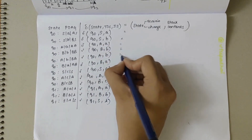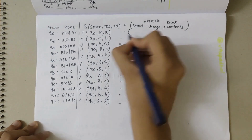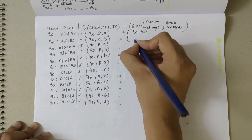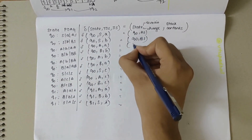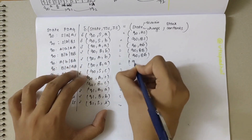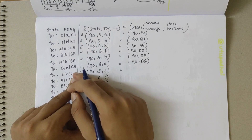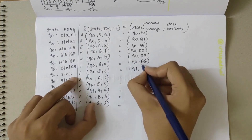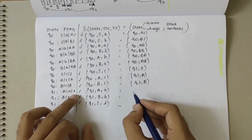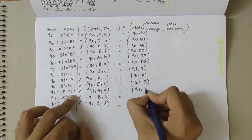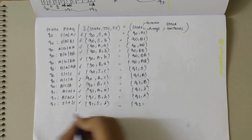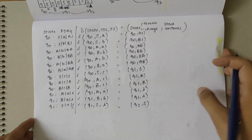The transition function values are: δ(Q0, a, S) = (Q0, AS); δ(Q0, b, S) = (Q0, BS); δ(Q0, a, A) = (Q0, AA); δ(Q0, b, B) = (Q0, BB); δ(Q0, b, A) = (Q0, BA); δ(Q0, a, B) = (Q0, AB). For C transitions: δ(Q0, C, S) = (Q1, S); δ(Q0, C, A) = (Q1, A); δ(Q0, C, B) = (Q1, B). For Q1: δ(Q1, a, A) = (Q1, λ); δ(Q1, b, B) = (Q1, λ); δ(Q1, λ, S) = (Q2, S).